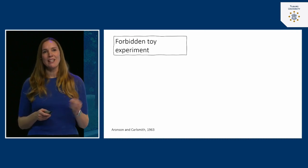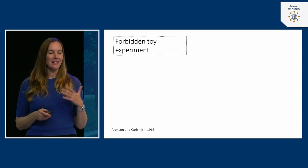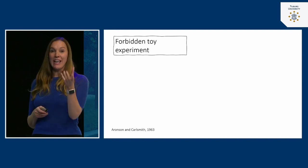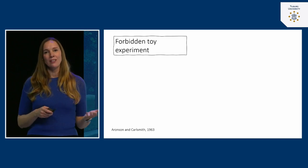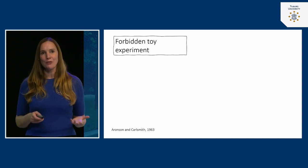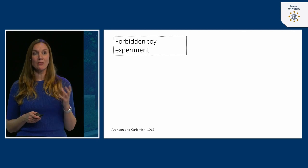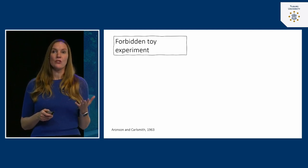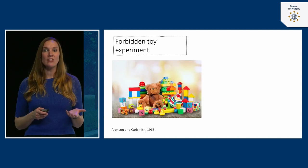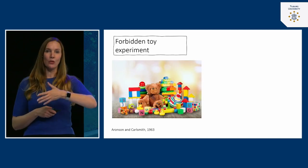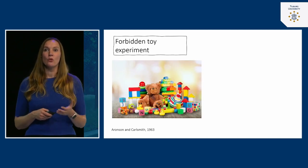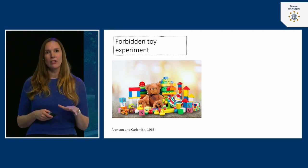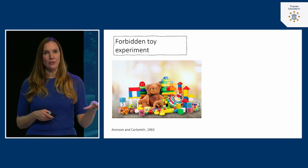It's called the Forbidden Toy experiment, and I think it's a very clever way of seeing how we can subtly influence children to change their behaviors. This experiment was conducted in 1963 by researchers Aronson and Carlsmith. They asked children who came to their laboratory to rate several toys on attractiveness.